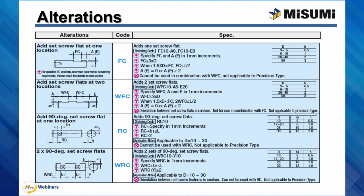Adding set screw flats to a shaft — you can specify the location and size of the flat. Misumi also offers an alteration that allows you to add two set screw flats at the same location, 90 degrees from each other. The flat is used to prevent the round surface of the shaft from being damaged when clamping the shaft in place with a set screw.